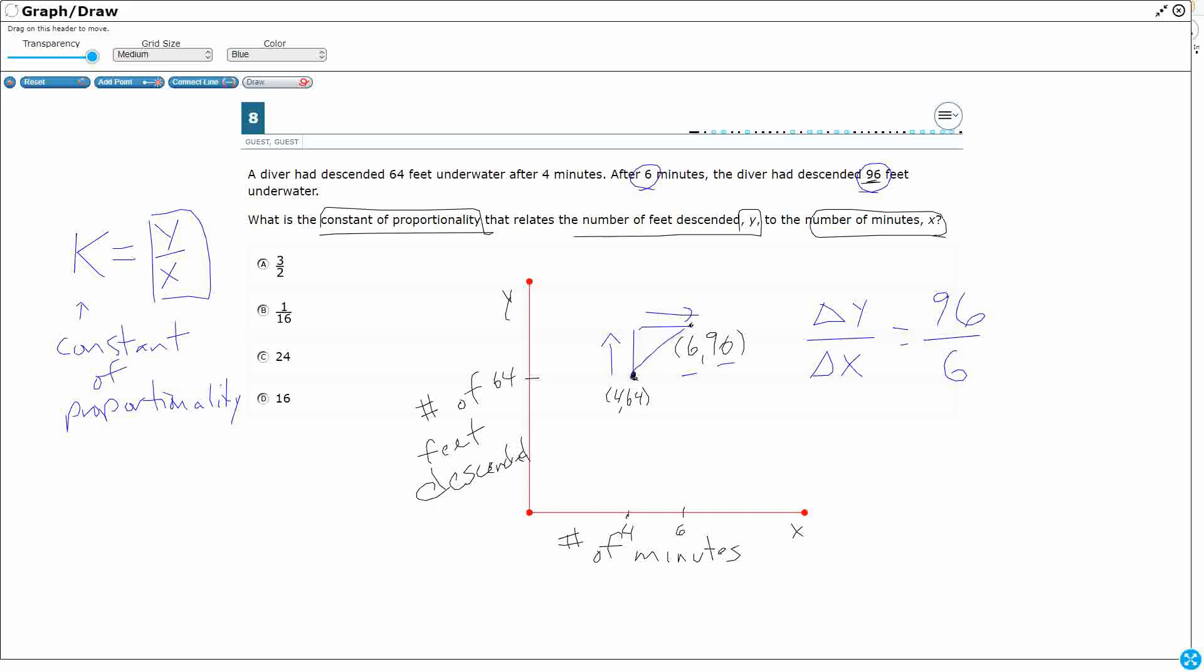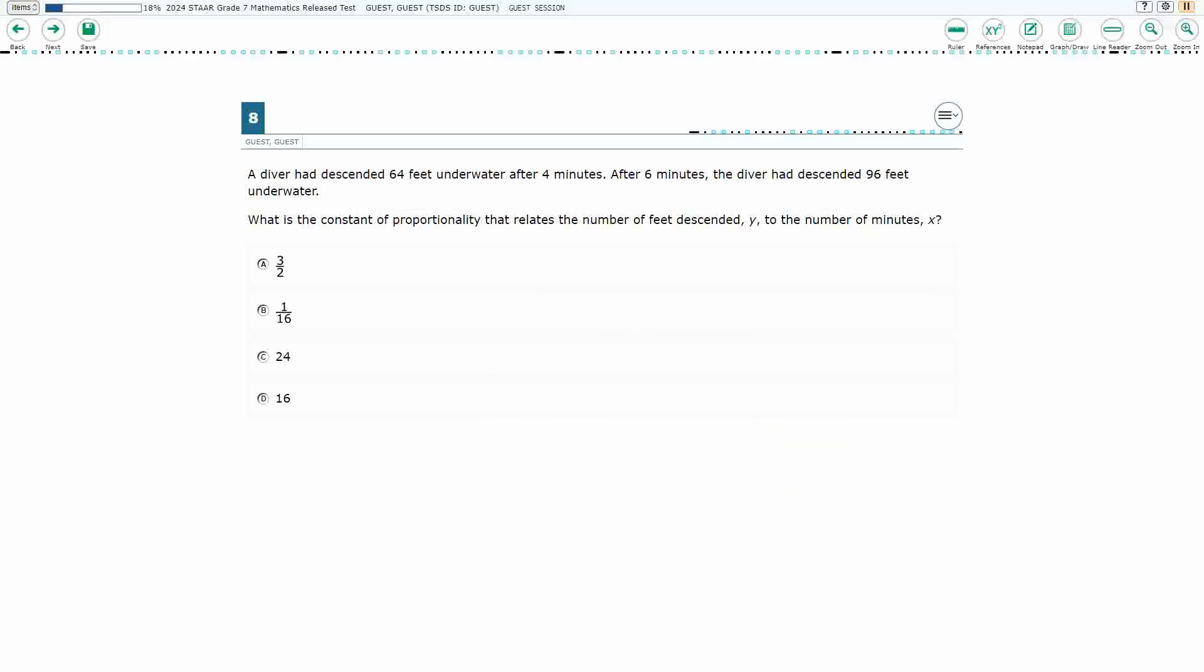Now, another point on this same line is also 64 over 4. So if we did it right, both of those are going to equal something, and they should be the same thing. So let's divide 4 into 64. That goes 1, 24. So that's 16 evenly. Let's see if the same thing happens here. 6 goes into 96, goes in once, 3. There we go, 16. So that constant of proportionality, that rate, is 16 feet per minute. So our answer here is D.